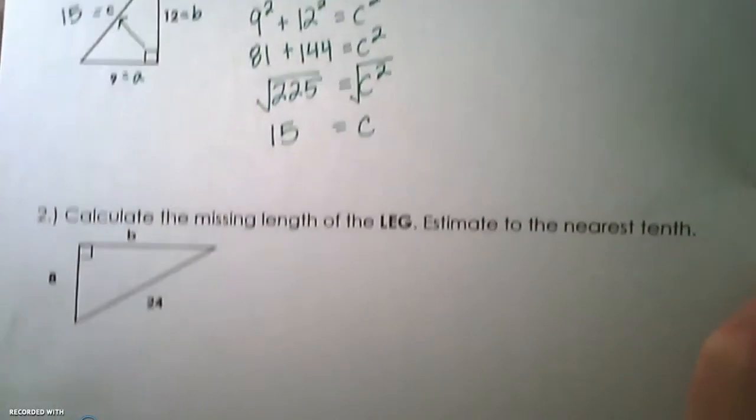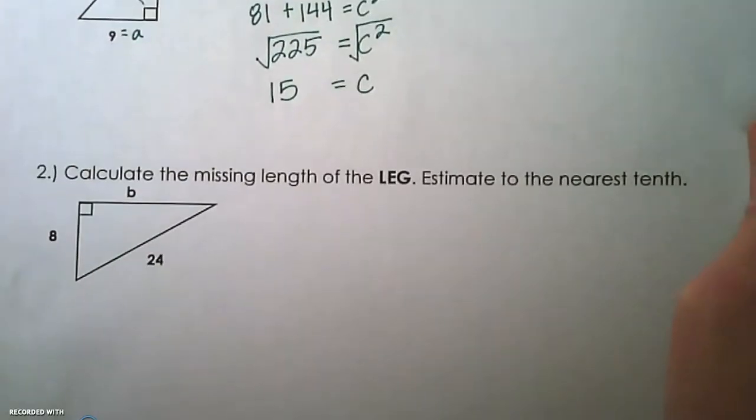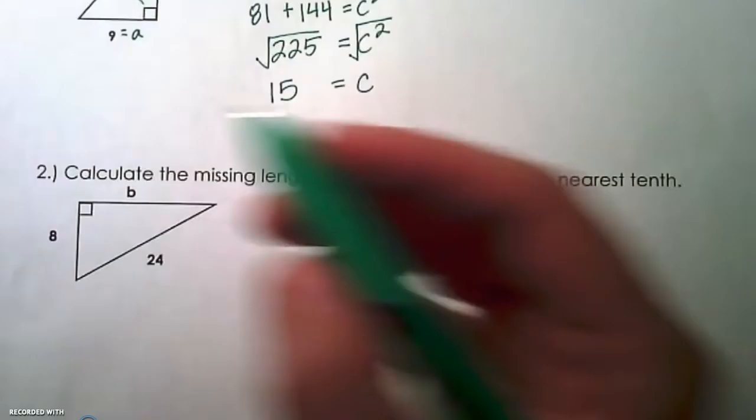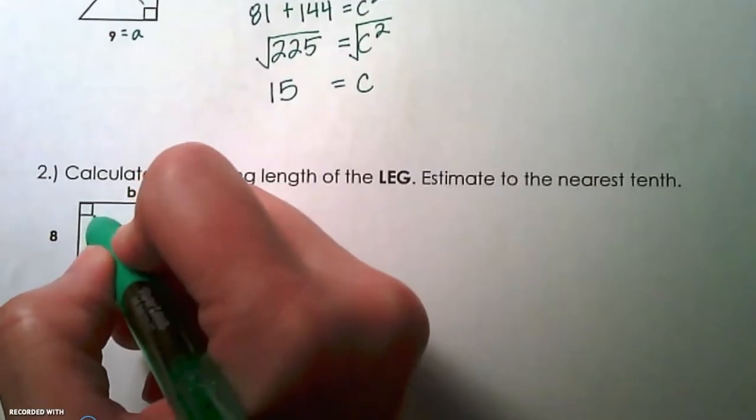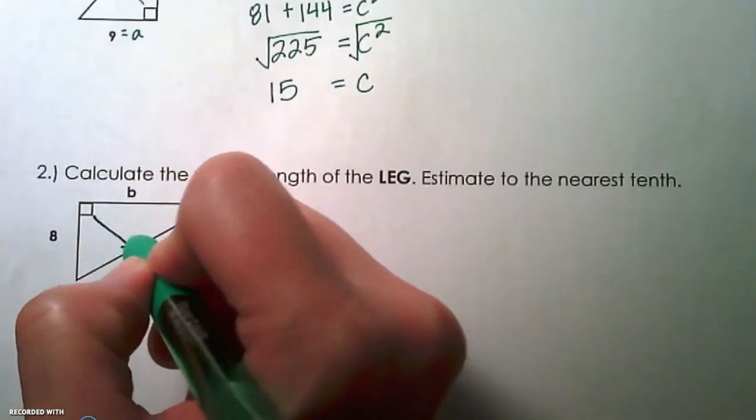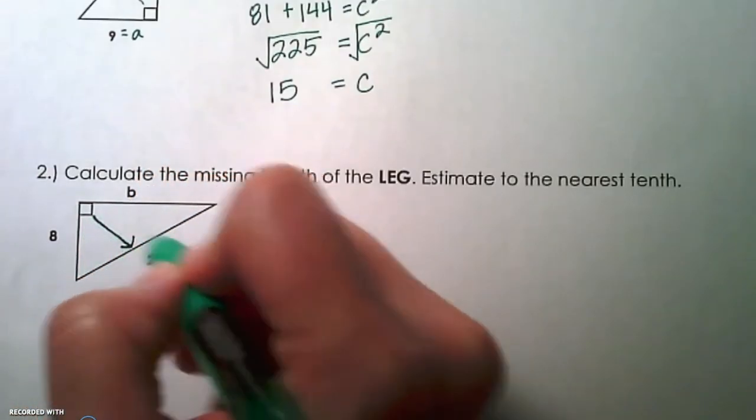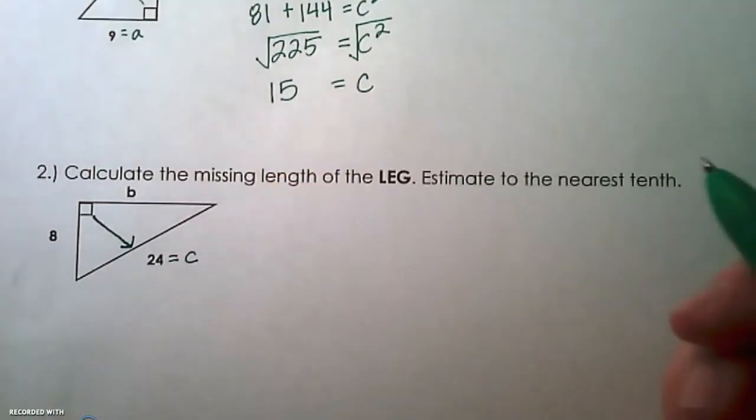All right, example number two, calculate the missing length of the leg. So this one, we're solving for a leg. If we locate that right angle and draw the line to the opposite side, that side has to be the hypotenuse. So 24 will have to be substituted in for c.